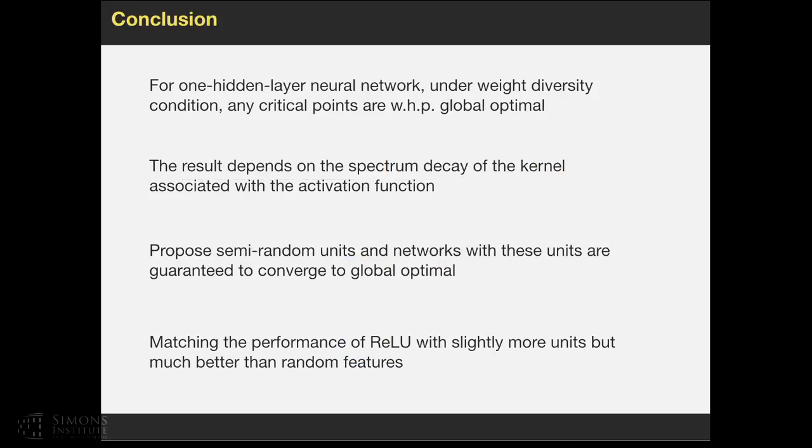In conclusion, we have analyzed a one-hidden neural network, and with this small weight discrepancy condition, any critical point with high probability is a global optimum. The result depends on the spectral decay of this kernel associated with the ReLU activation function. We also propose the semi-random features, and these features are guaranteed to converge to the global optimum with high probability. We also show that using slightly more units, we can match the performance of ReLU. But for fully random features, it requires many more units. Thanks.